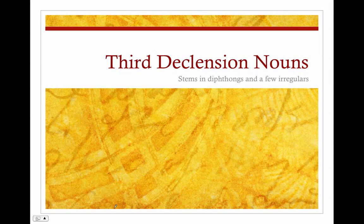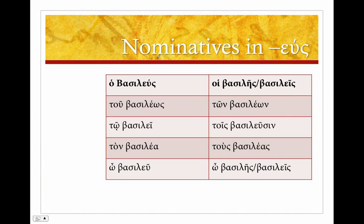Let's finish off the third declension nouns today. We're going to look at stems that end in diphthongs, and those diphthongs are going to be epsilon-upsilon, alpha-upsilon, or omicron-upsilon, and a few irregulars. Let's move on. We're going to look first at stems in epsilon-upsilon, or nominatives in -eus.